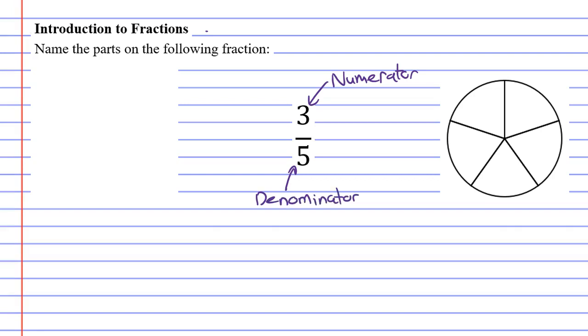I have a method for remembering these. I always remember that D for denominator is the same letter that we use for down. So the denominator is the number that is down below the other number.